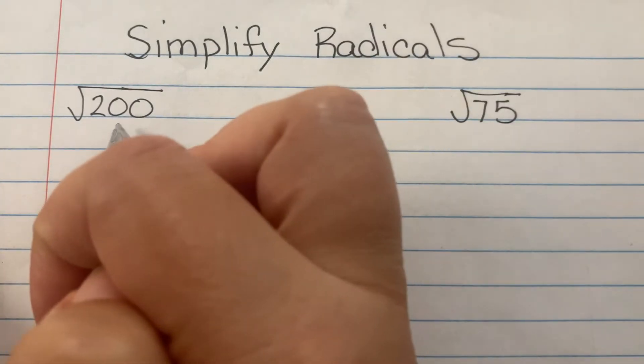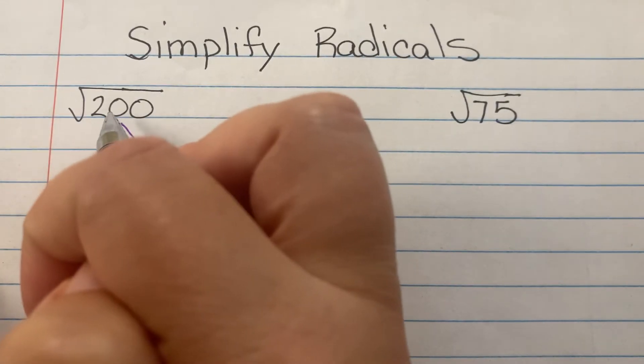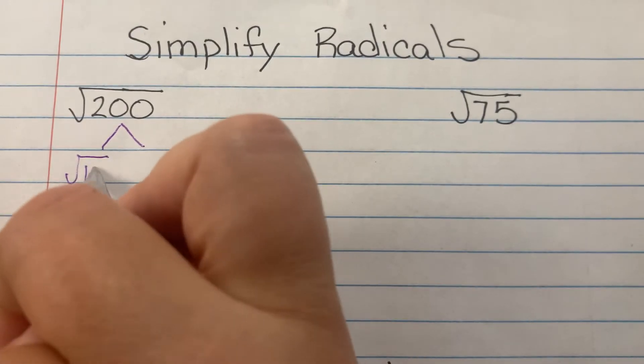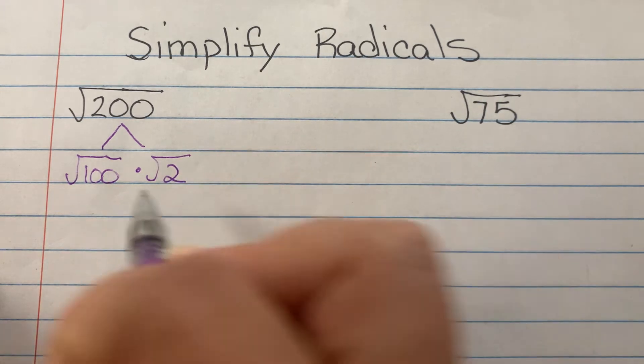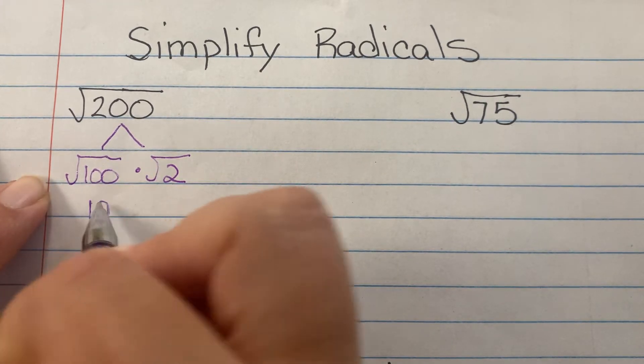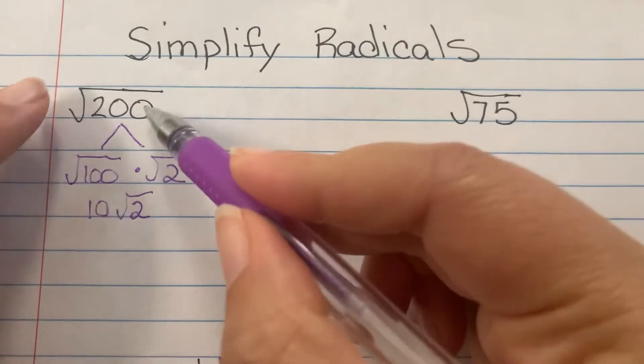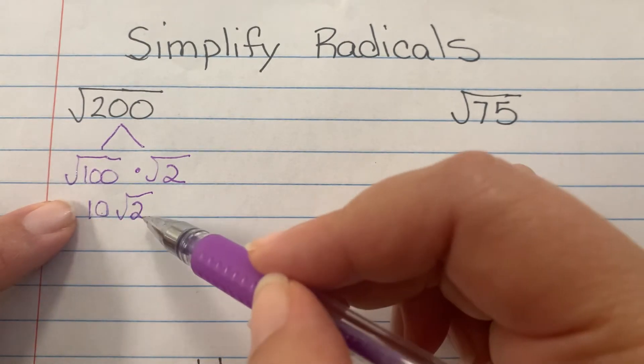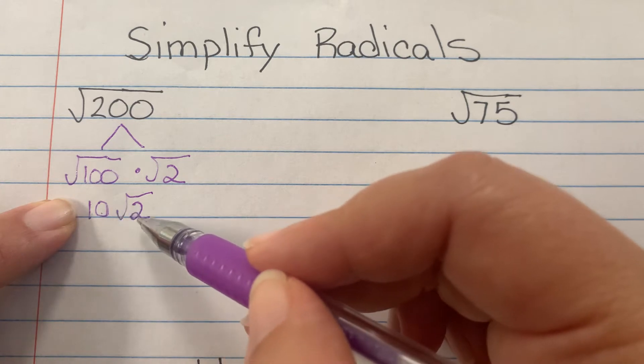So for example, I look to see if there's any perfect squares that can multiply together to equal 200. The square root of 100 times 2 would equal 200, and then the square root of 100 is 10. So the square root of 200 can be simplified to 10 square root of 2. Remember that means it's 10 times the square root of 2.